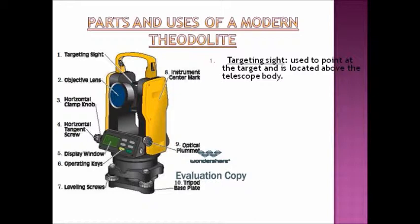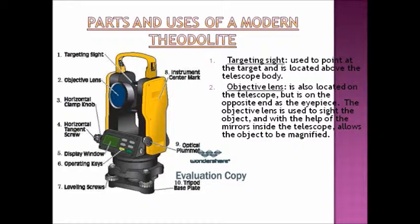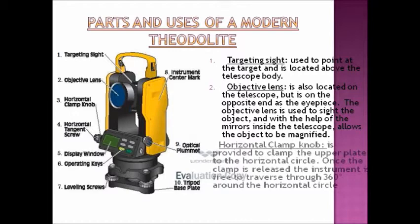Parts and uses of a modern theodolite. First we have the target sight. It is used to point at the target and is located above the telescope body. Then we have the objective lens. It is also located on the telescope, but is on the opposite end of the eyepiece. The objective lens is used to sight the object and with the help of the mirrors inside the telescope, allows the object to be magnified.